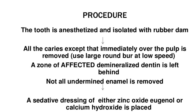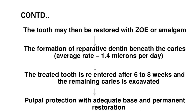Procedure: The tooth is anesthetized and isolated with rubber dam. All the caries except that immediately over the pulp is removed. Use a large round bur at low speed. A layer of affected demineralized dentin is left behind. Not all undermined enamel is removed. A sedative dressing of either zinc oxide eugenol or calcium hydroxide is placed.